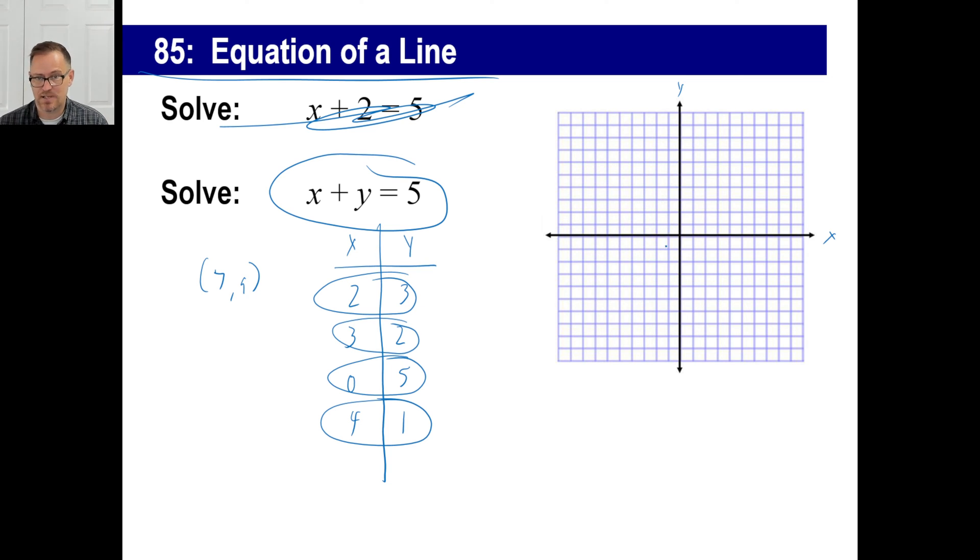So two and three looks like this. That's the X, this is the Y. So two over, and then up three, and then there's a point. And over here, three and two, one, two, three over, and then only two up. There we go.